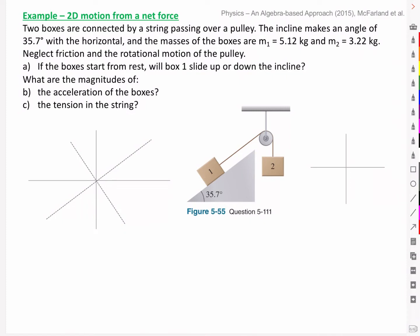If the boxes start from rest, will box 1 slide up or down the incline? And what are the magnitudes of the acceleration of the boxes and the tension in the string?